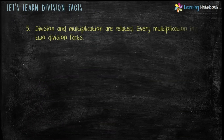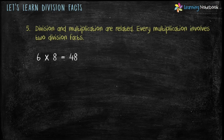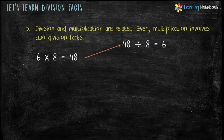And the last division fact is, division and multiplication are related. Every multiplication involves 2 division facts. For example, 6 into 8 equals 48. There are two division facts for it: first is 48 divided by 8 equals 6, and the second division fact is 48 divided by 6 equals 8.